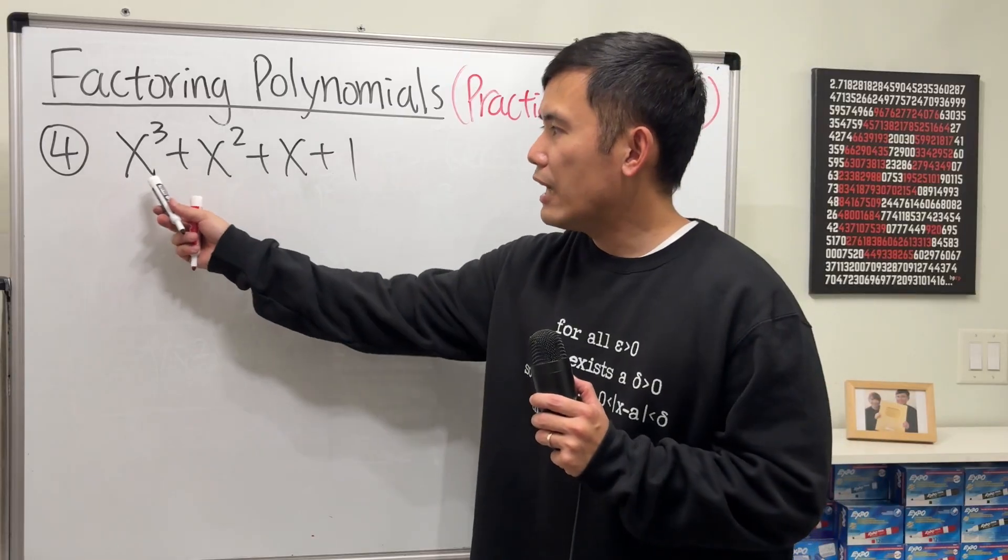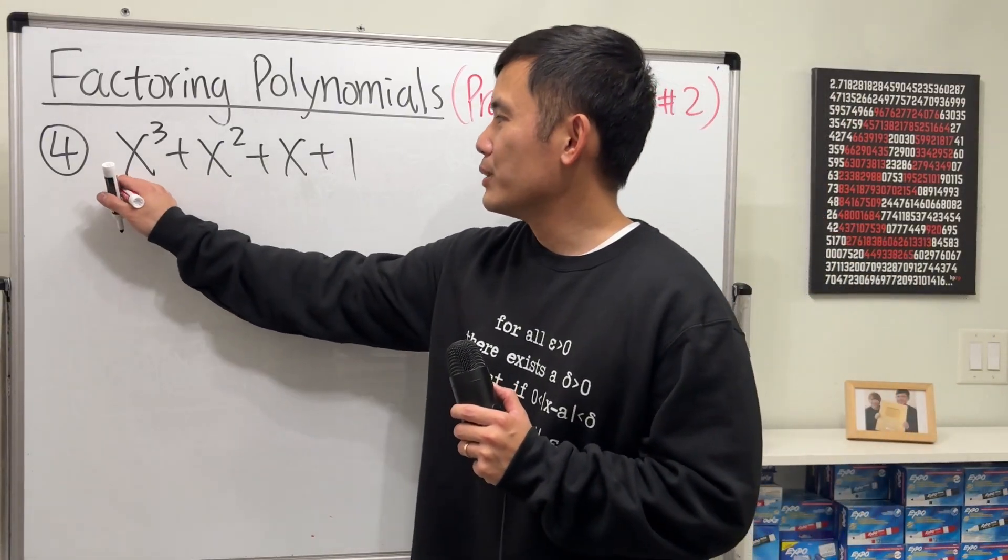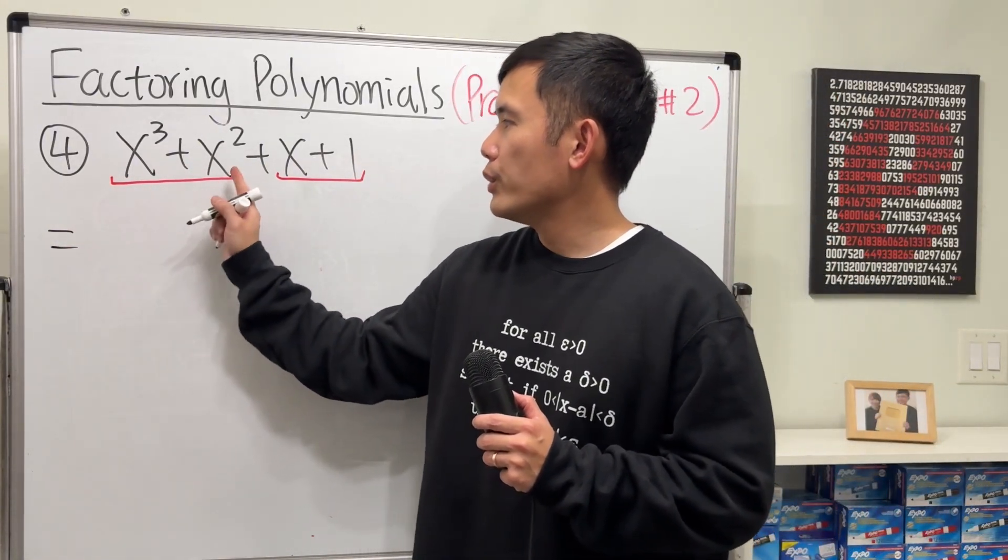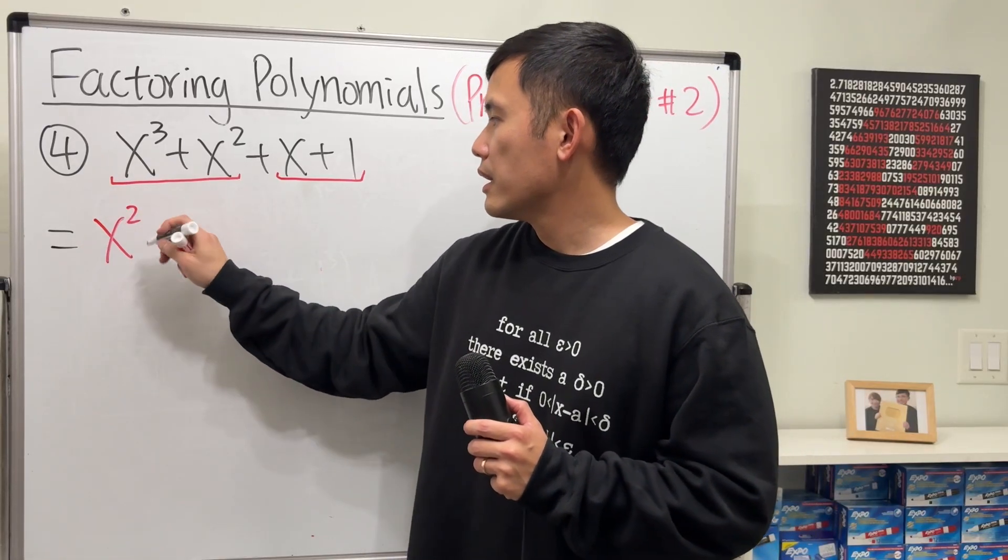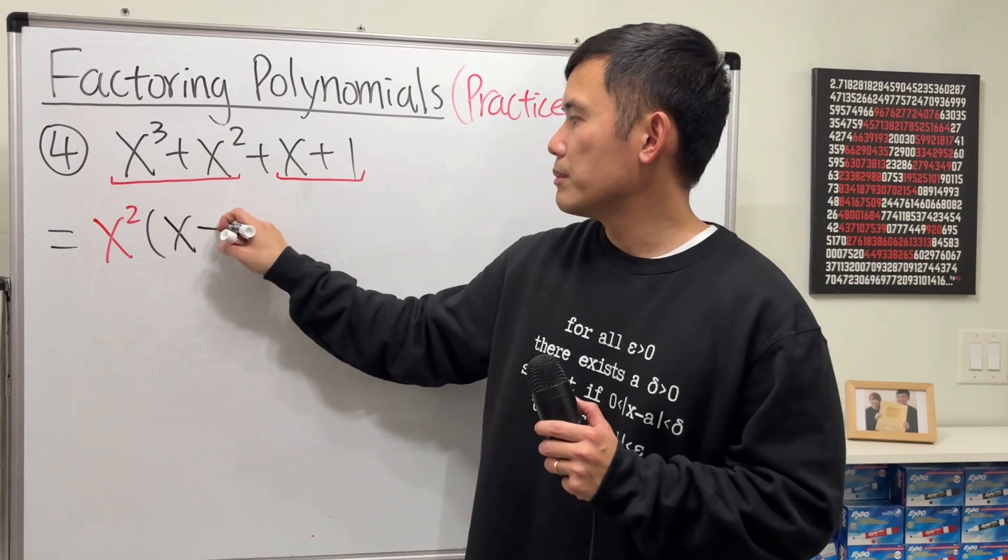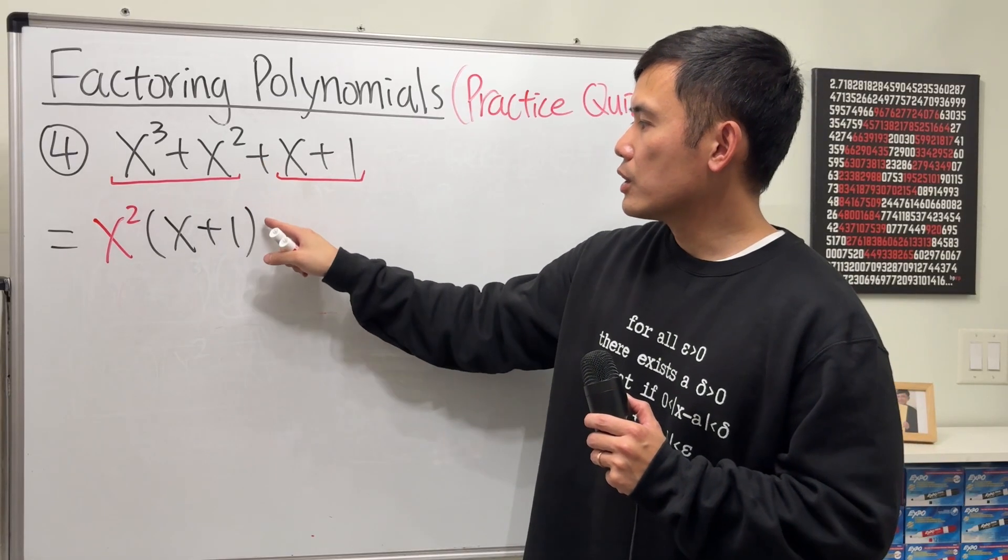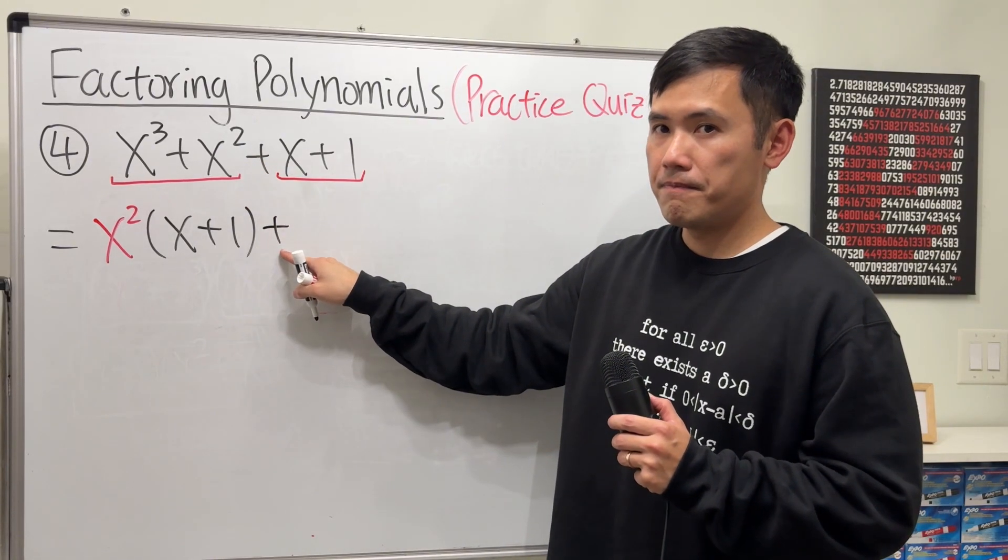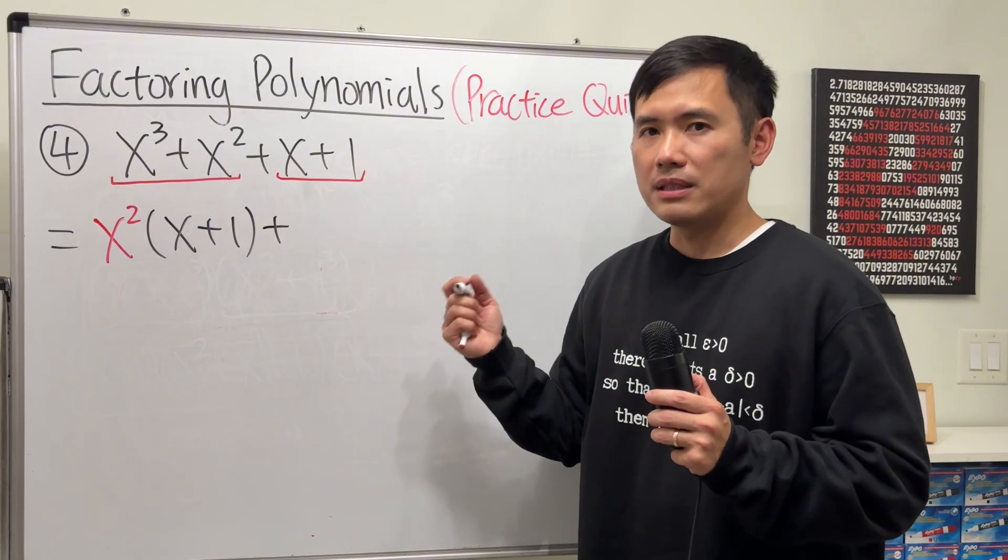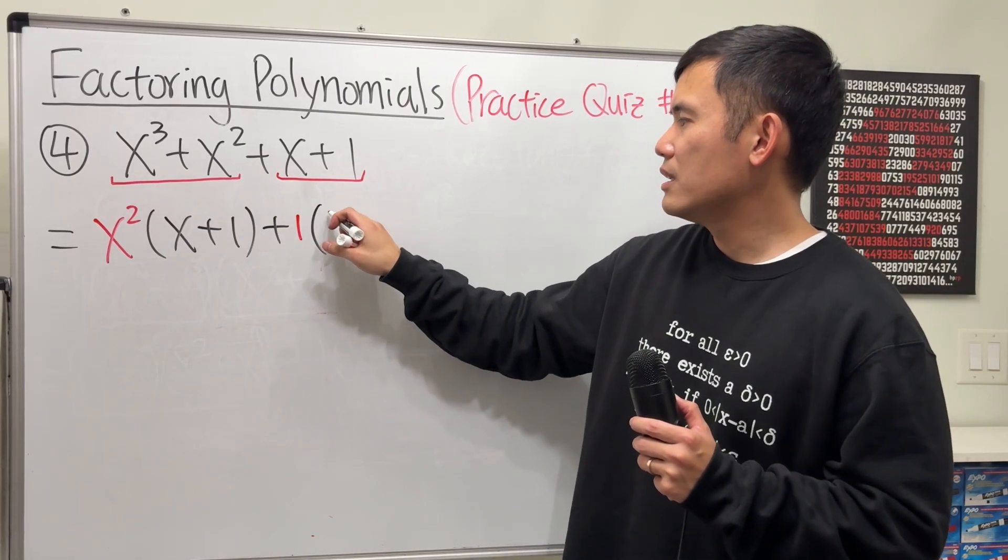Now for number 4, we have four terms, so we do it by grouping. Take a look at the first two terms and the last two terms. From the first two terms, we can factor out x². And the power will go down by 2, and the power will go down by 2. So we get x(x + 1). Now when we do factor by grouping, whatever this sign is, go ahead and write it down right away. And then for the x + 1, cannot factor out anything, right? But technically, we can factor out 1. So put out +1 and then put parentheses, and we still get x + 1.